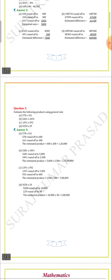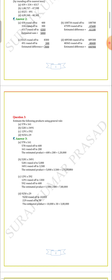Let's move on to the last question of exercise 1.3, question number 3: Estimate the following products using the general rule. Here the difference is that in previous questions we did addition and subtraction, but here we find the estimated product by multiplying. 578 rounds off to 600 as it is the nearest hundred, and 161 rounds off to 200. The estimated product is 600 × 200 = 1,20,000.